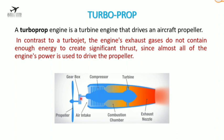Almost 80 percent of the power is used by the propeller and only 10 to 20 percent comes out as exhaust gas thrust. A reduction gearbox is used to control the speed of the propeller. Turboprop engines provide efficient power at lower speeds, so they are used for low-speed aircraft.